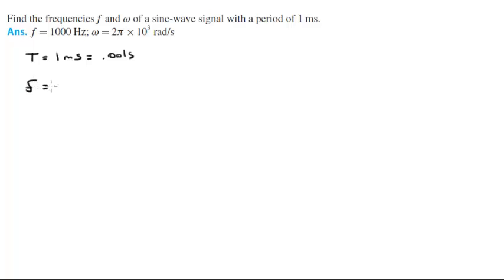So the frequency is given by 1 over T, 1 over the period, and it is equal to 1 divided by 0.001, gives you 1000 and the unit is Hertz.